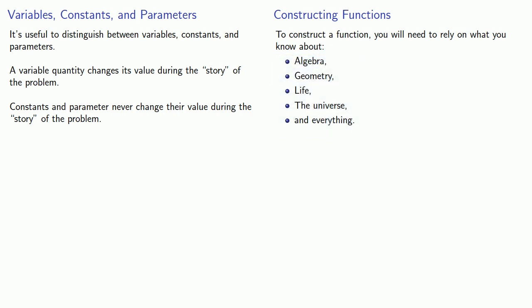So, for example, if a cell is changing shape, for example, an amoeba crawling along a surface, then the volume is constant, but its surface area will change.